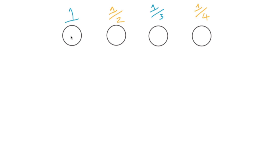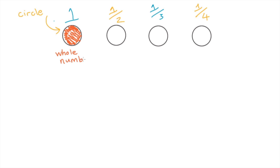We have four numbers and we have four circles. This is called a circle, if you were not sure. Now, I am going to show the circle as the number. This is all of the circle — the number one. So, one is called a whole number. Whole means all. So, this is a whole number.